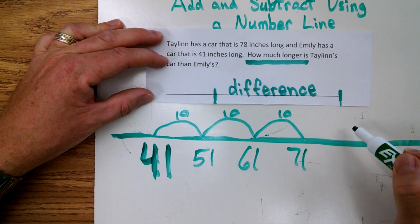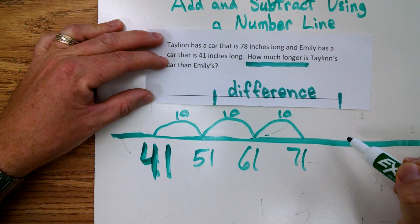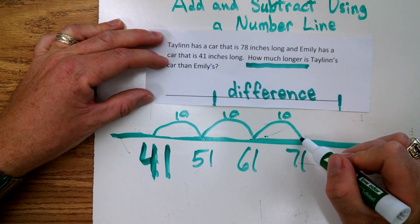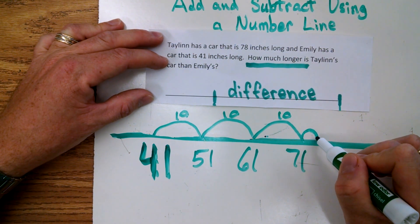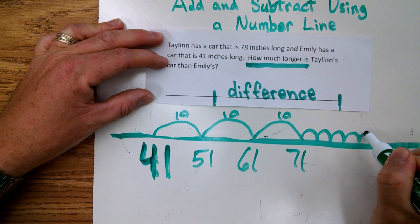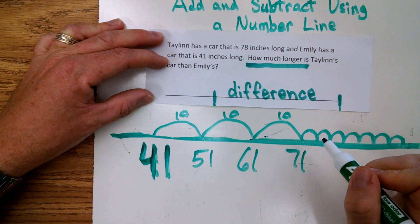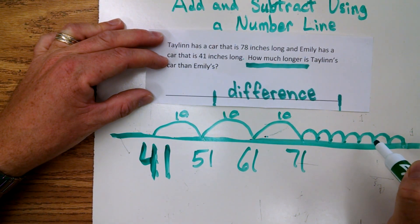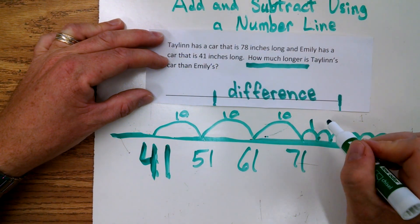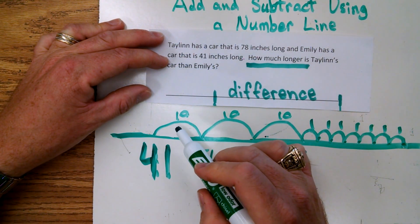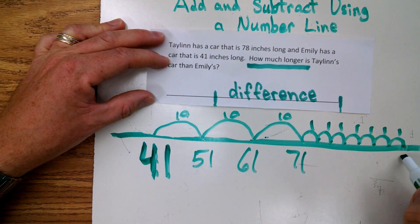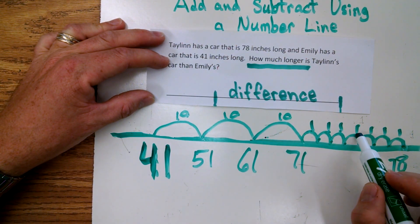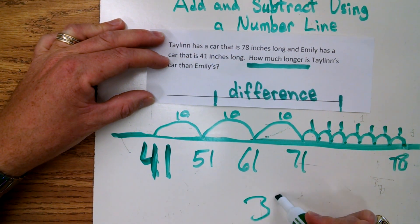So we're at 71. Let's count up by ones: 72, 73, 74, 75, 76, 77, 78. Now let's go back and add up the pieces to see how much we went up to get to 78. We counted three tens — 10, 20, 30 — and then seven ones — 31, 32, 33, 34, 35, 36, 37. We went up 37.